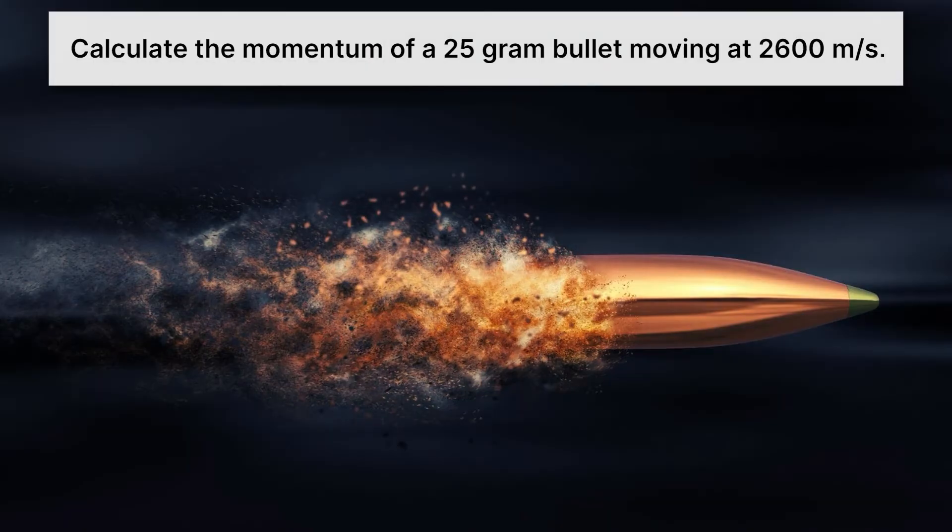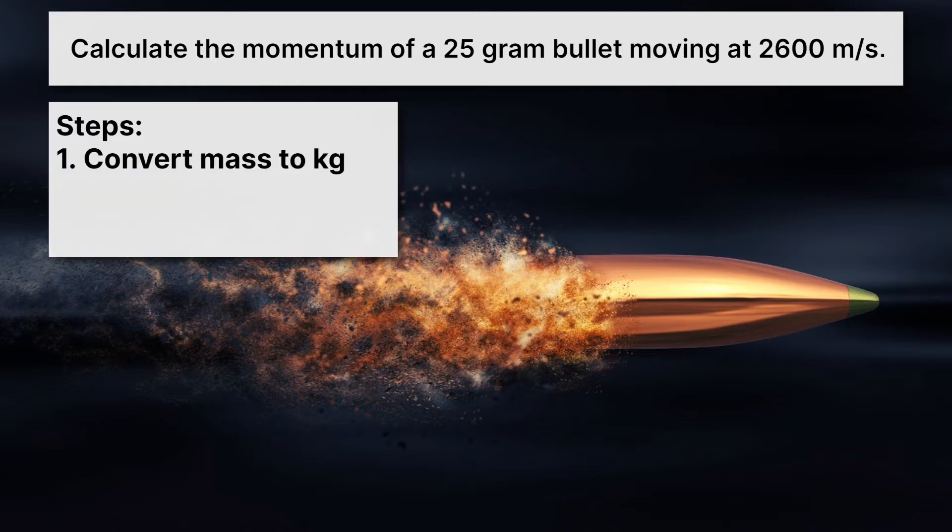First up, let's actually use this equation by calculating the momentum of a 25 gram bullet moving at 2600 meters per second. Pretty fast, right? There's going to be two steps here. First up, we're going to have to convert mass to kilograms. Because remember, we said that mass is always in kilograms. And here we've been given the mass of the bullet in grams. And then we'll go ahead and calculate momentum.